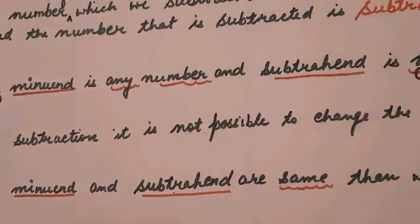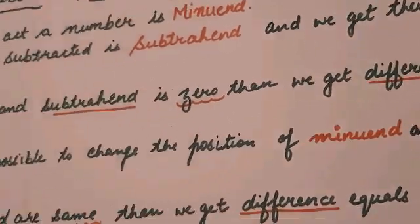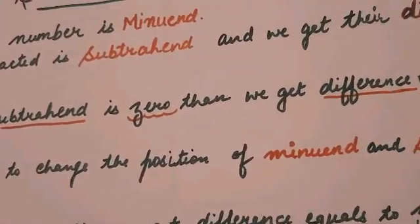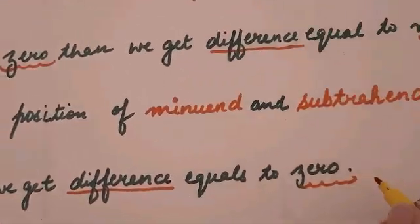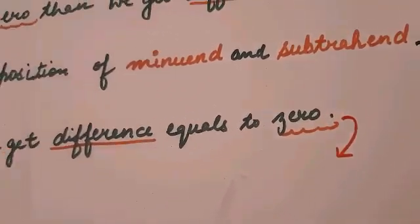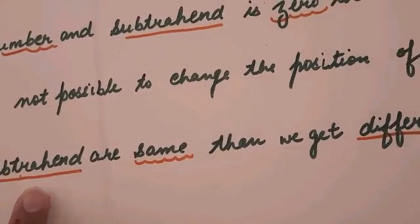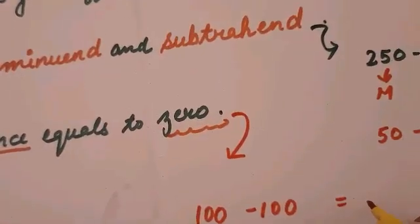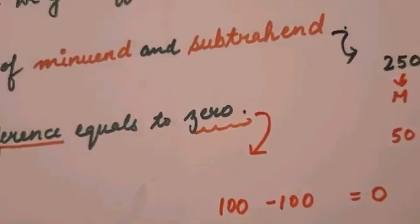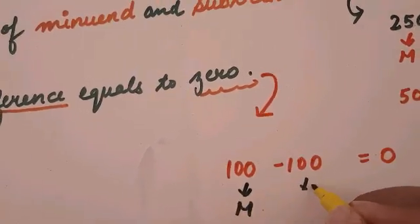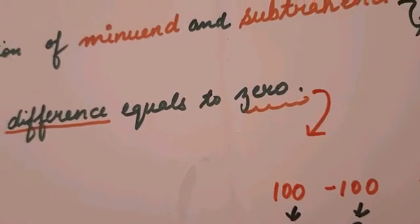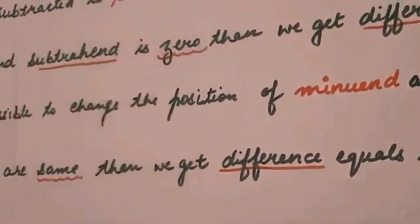Point number four: if the minuend and subtrahend are the same, then we get the difference equal to 0. For example, if I take 100 as the minuend and 100 as the subtrahend, then 100 minus 100 equals 0. These are some basic points about subtraction. I am also sending two or three worksheets with this video — try to solve them. Hope you will understand the basic concepts of addition and subtraction.